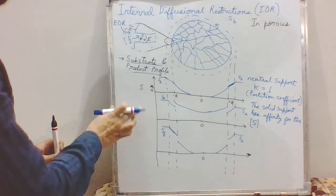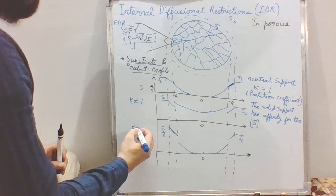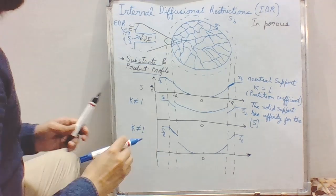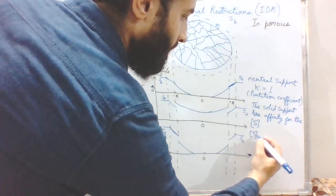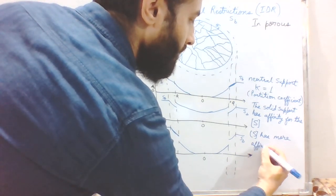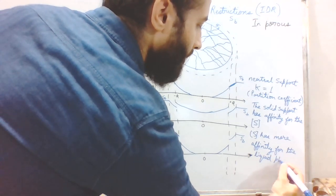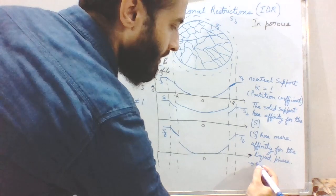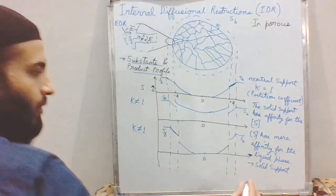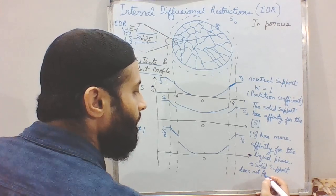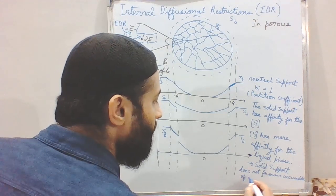In both these latter cases — attraction and repulsion — the partition coefficient is never equal to one. The case where the support repels substrate corresponds to the substrate having more affinity for the liquid phase, meaning the solid support does not favor accumulation of the substrate.